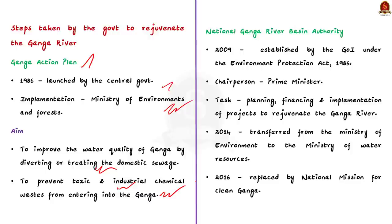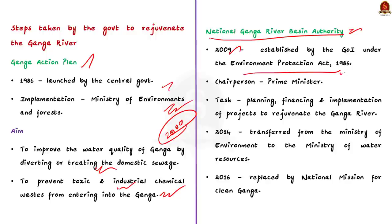The Ganga Action Plan brought out some outcomes but was not very significant, and the plan was finally discontinued in 2000. The second important step is the setting up of the National Ganga River Basin Authority. It was established by the central government in 2009 under the Environment Protection Act 1986, and was chaired by the Prime Minister.